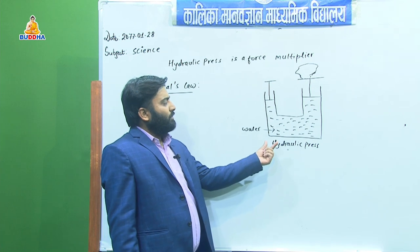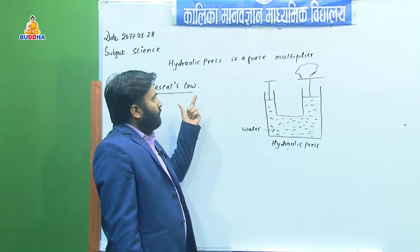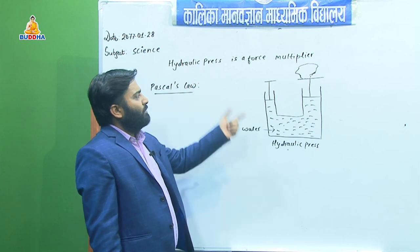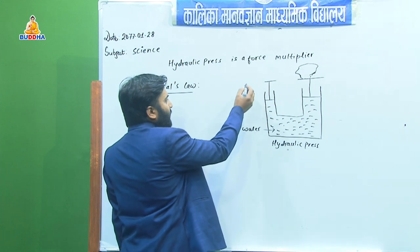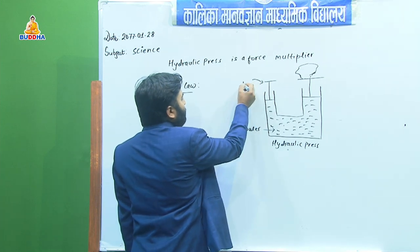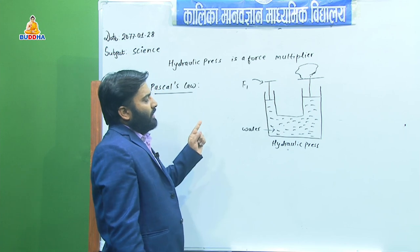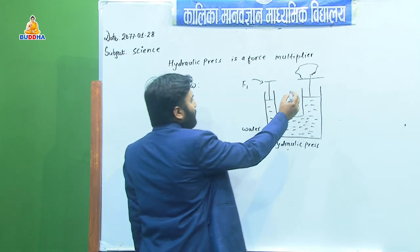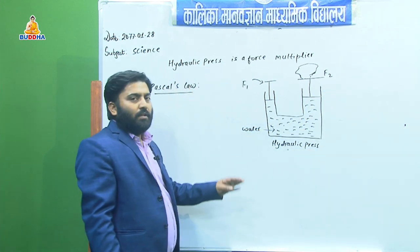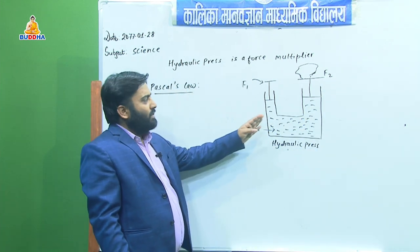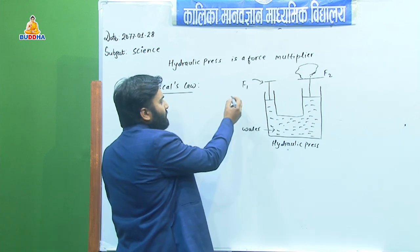This hydraulic press is used to lift a heavy load. We are going to prove that this hydraulic press is a force multiplier — that means the force we input, which is the effort F1, is multiplied, and we can lift a heavy load by applying a very small amount of effort.